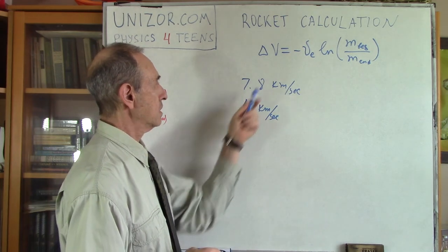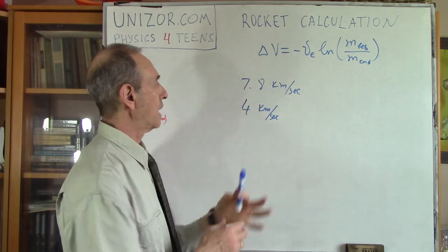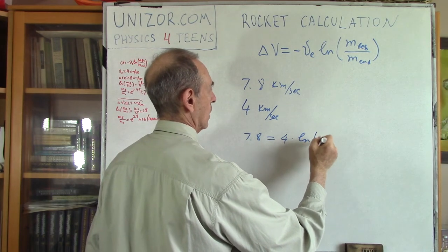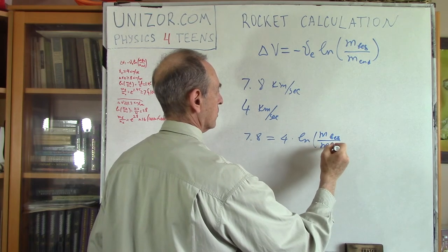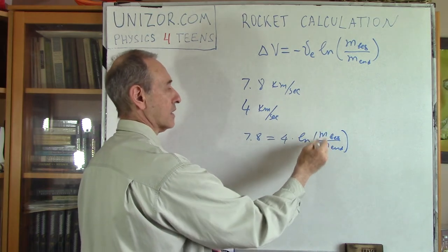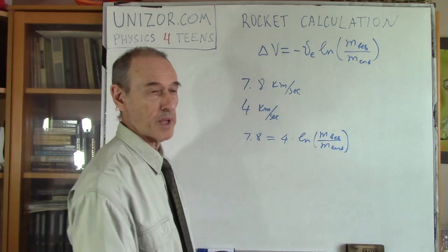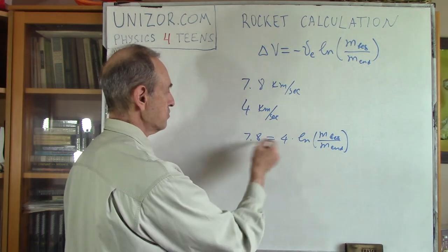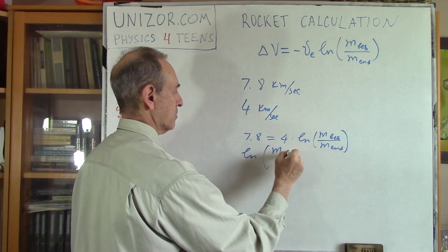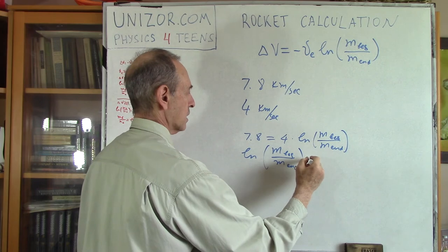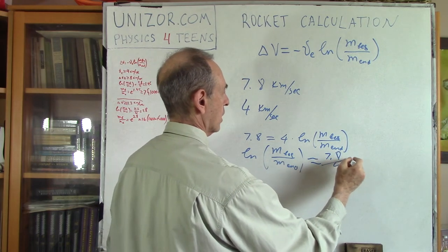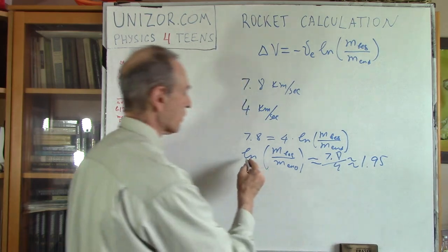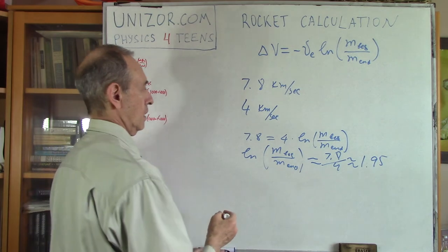So VE, obviously I should put minus, and then this minus would be plus. So it would be 7.8 is equal to 4 times logarithm of M in the beginning divided by M at the end. By the way, this is always greater than 1, because in the beginning, with the fuel, with the propellant, the rocket mass is greater than at the end when everything is exhausted. Which means my logarithm of M in the beginning divided by M at the end is equal approximately 7.8 divided by 4, which is about 1.95. So logarithm of this ratio is 1.95.